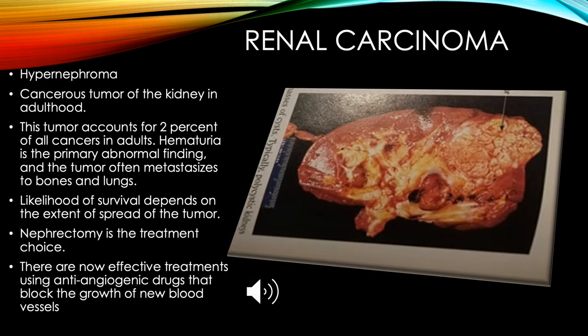Renal carcinoma (hypernephroma) is a cancerous tumor of the kidney in adulthood, accounting for 2% of all cancers in adults. Hematuria (blood in the urine) is the primary abnormal finding, and the tumor often metastasizes to bones and lungs. Likelihood of survival depends on the extent of spread. Nephrectomy is a treatment choice, and there are now effective treatments using anti-angiogenic drugs that block the growth of new blood vessels.